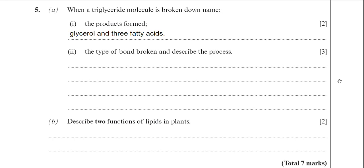Part 2 then, the type of bond broken and describe the process. Alright, so we're looking at what bond is broken now when a triglyceride is broken down. The bond is the ester bond. And the name of the reaction that causes the breaking of that ester bond is known as the hydrolysis reaction.